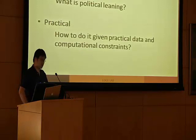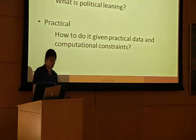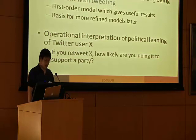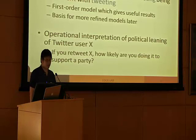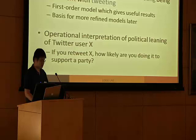Given these two approaches, we have two big questions. The first is philosophical: what is political leaning, and how do we define it in a simple and meaningful way? The second is practical: how do we get a very simple method — simple in terms of modeling assumptions and also computationally? Our contributions: we propose a simple technique based on convex optimization, based on the premise that tweeting and retweeting behavior are consistent. Our approach can be interpreted as a first-order model that gives useful results and can serve as a basis for more refined methods.